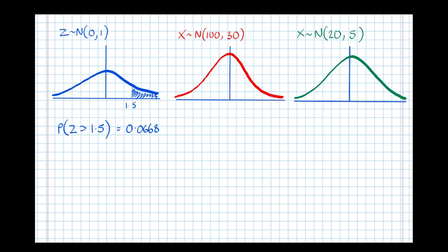Now let's do something similar for this distribution. The mean of this distribution is 100, and to be consistent I'll mark the mean 0 on the previous one. The mean is 100, and we want the probability that something lies 1.5 or more standard deviations from the mean. The variance is 30, so the standard deviation is root 30, meaning 100 plus 1.5 root 30 is our lower bound for that region.